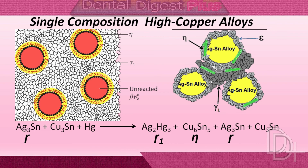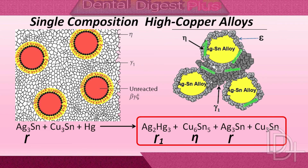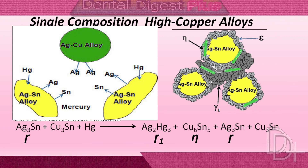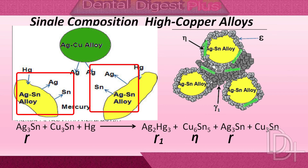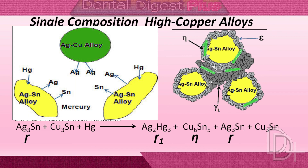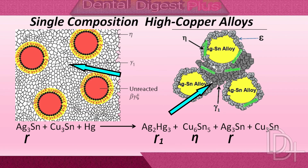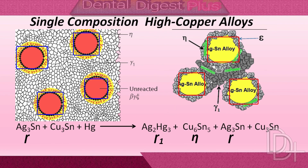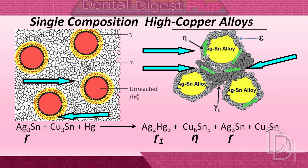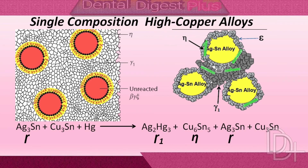When triturated with mercury, there will be formation of the gamma-1 phase and eta phase, and also presence of unreacted gamma and epsilon phases. When single-composition alloy is triturated with mercury, silver and tin from the silver-tin phases dissolve in mercury, while very little copper dissolves. The gamma-1 crystals grow and form a matrix that binds together the partially dissolved alloy particles. The eta crystals are found as meshes of rod-like crystals at the surfaces of alloy particles as well as dispersed in the matrix. These crystals are much larger than the eta crystals found in the reaction layers surrounding the silver-copper particles in admixed amalgams.